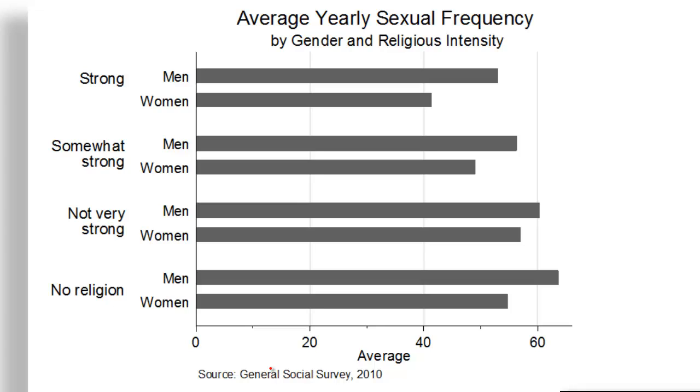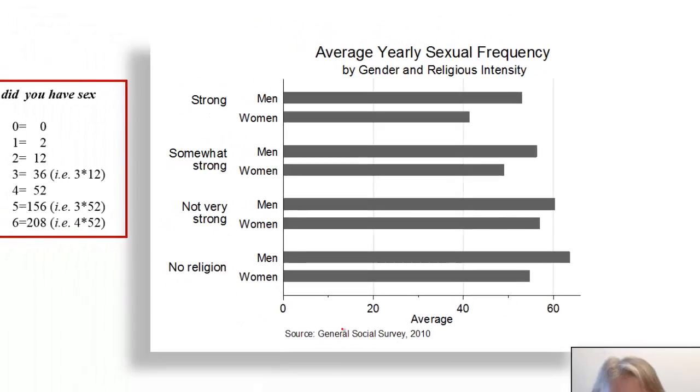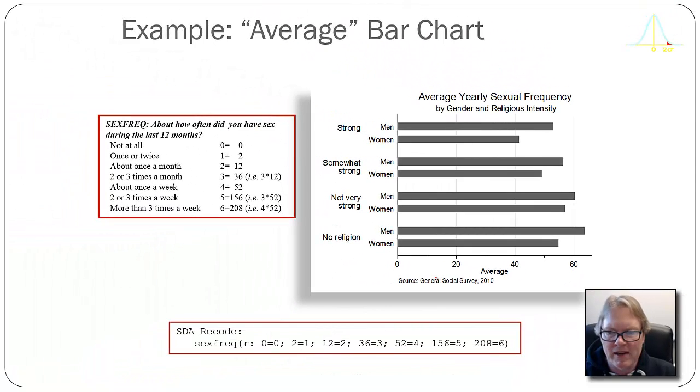The bar represents average sexual frequency per year. So now you can see, we can directly compare means for men and women among people who have no religious intensity. We see a couple of different patterns going on here.